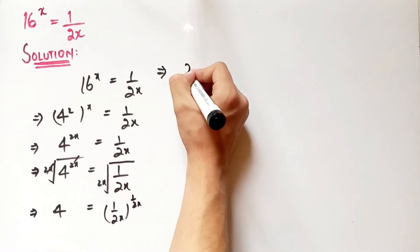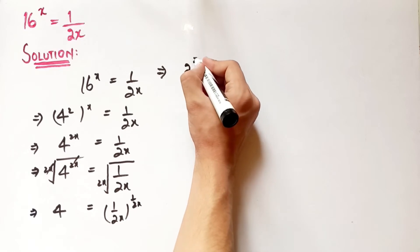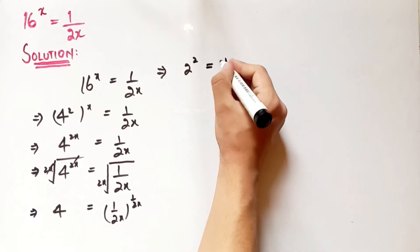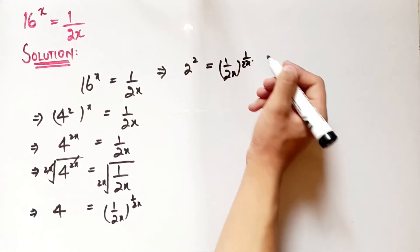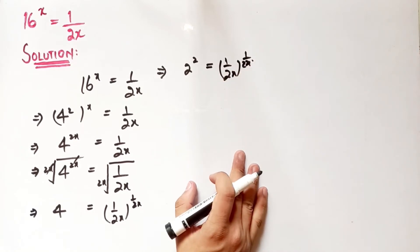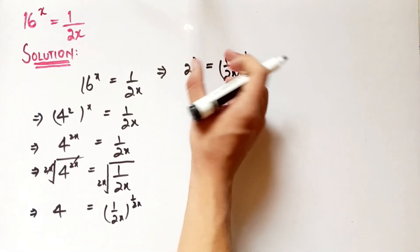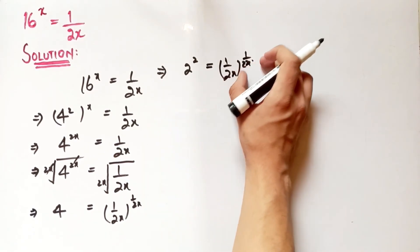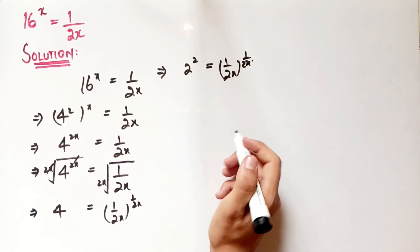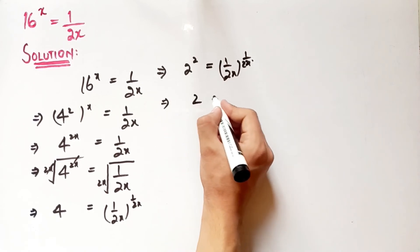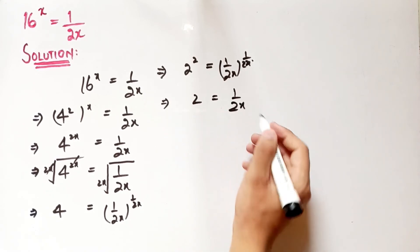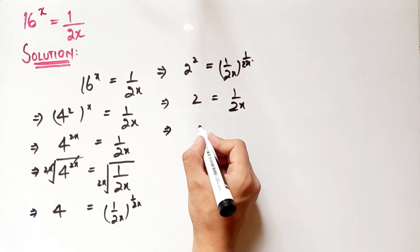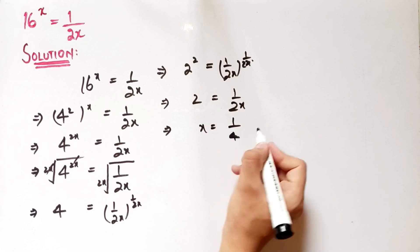So writing 4 as 2 to the 2, this equation will become something like this. Now we have same base to the same power on both sides. So we can write 2 as 1 over 2x, or this becomes x equals 1 over 4. So this is the final answer.